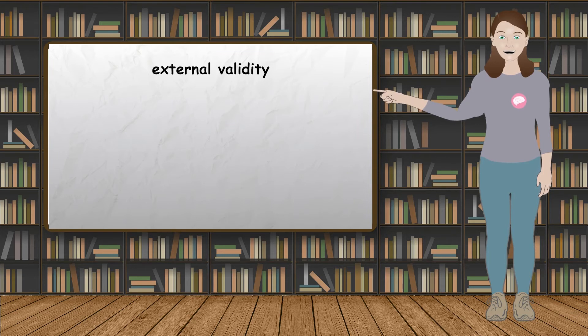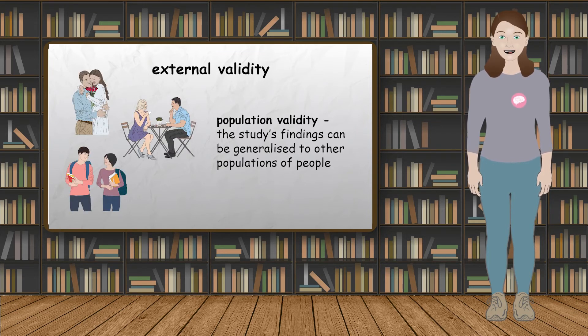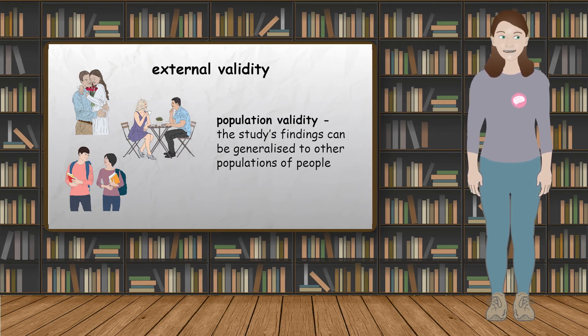Population validity is another type of external validity, which refers to the extent to which the study's findings can be generalized to other populations of people.